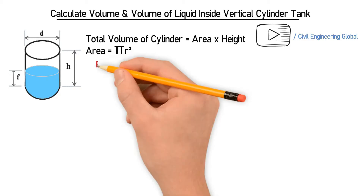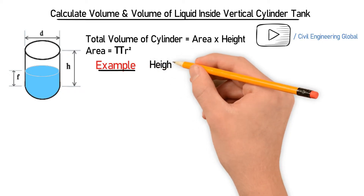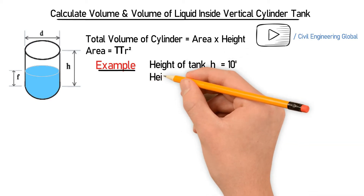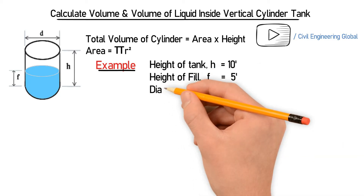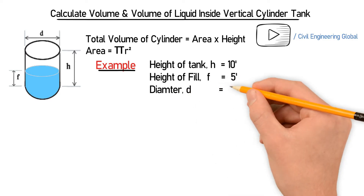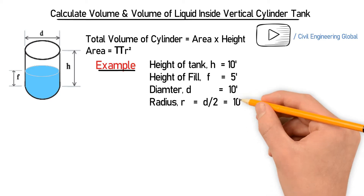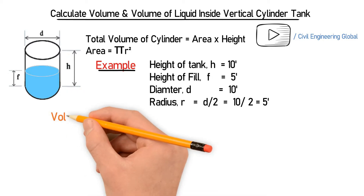Let's take an example. In this example we have the following data: height of the tank H is 10 feet, height of the liquid filled inside F is 5 feet, and diameter D is equal to 10 feet. So radius R is equal to D divided by 2, which gives you 5 feet.